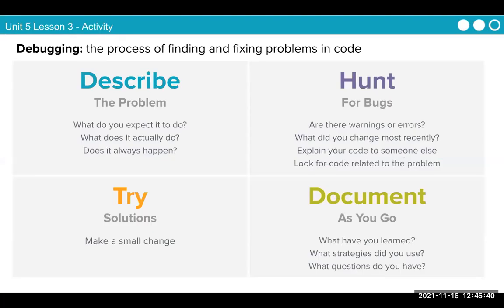Debugging: the process of finding and fixing problems in code. Describe the problem — what do you expect it to do? What does it actually do? Does it always happen? Think about an on-event if it doesn't always happen.